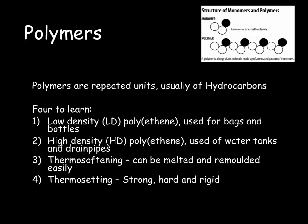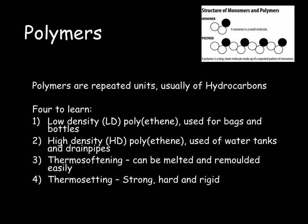Polymers are often used in place of traditional materials. We've looked at polymers before in much more detail in the polymer tutorial, which is part of topic 7, the organic chemistry unit. However, as a recap, polymers are repeated units usually made up of hydrocarbons. Here we have our monomer, which is a small molecule, and our polymer, which is our long-chain molecule made up of this repeated pattern of monomers.